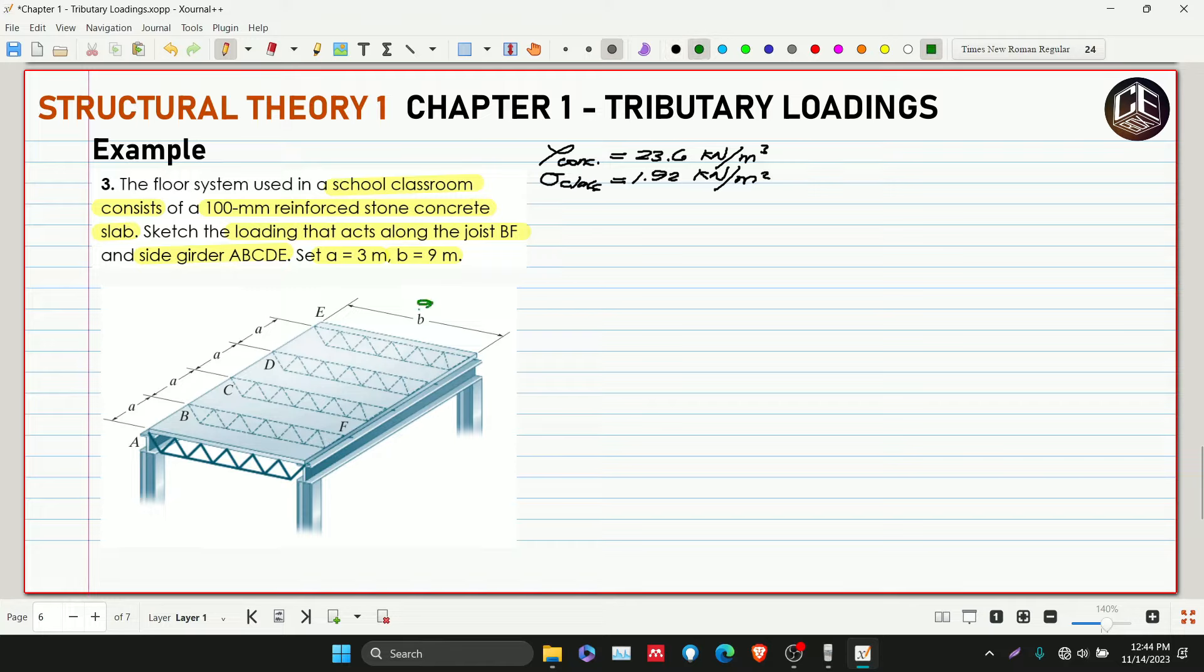Check the ratio. s is equivalent to L1 over L2. Our L1 is 3 meters and our L2 is 9 meters. So 3 over 9 is 0.33.